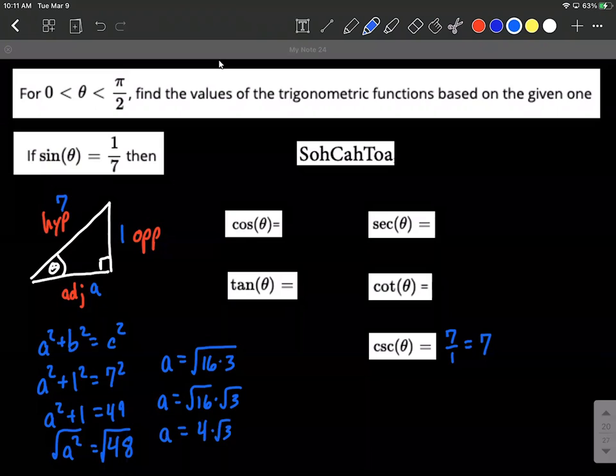Now constructing these additional trigonometric ratios from SOHCAHTOA we can say the cosine is going to be the adjacent 4 square root of 3 over the hypotenuse 7. The tangent will be opposite 1 over the adjacent 4 square root of 3.